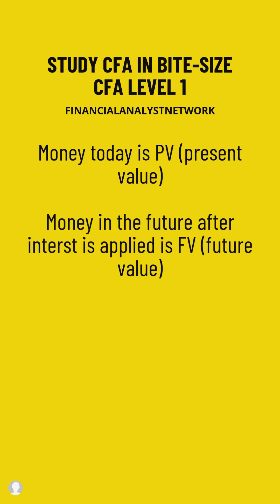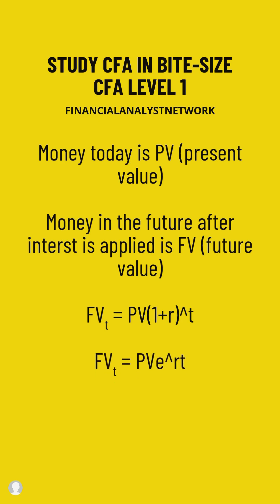There are two types of formulas for the time value of money. One is the discrete time period formula: future value at time t is equal to the present value times one plus the interest rate, to the power of the number of times it compounds. In the first formula, it compounds annually. The second is the continuous compounding formula, which compounds infinitesimally — less than a second.